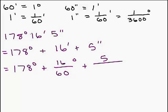And then 5, a second is 1/3600th of a degree. So that's why we have to divide by 3600. So basically you want to enter the whole number. If you want, you could put 178 plus 16 over 60 plus 5 over 3600 and you'll get the whole answer.